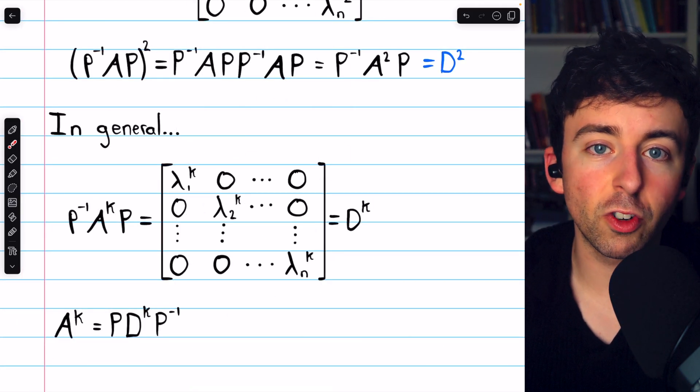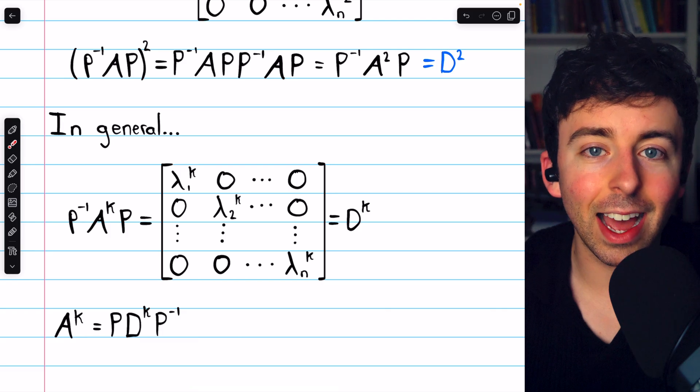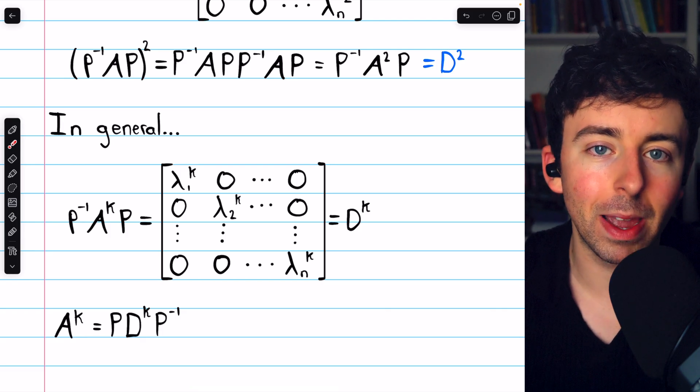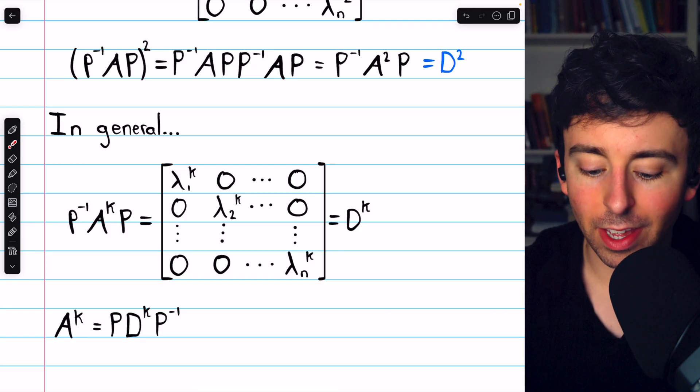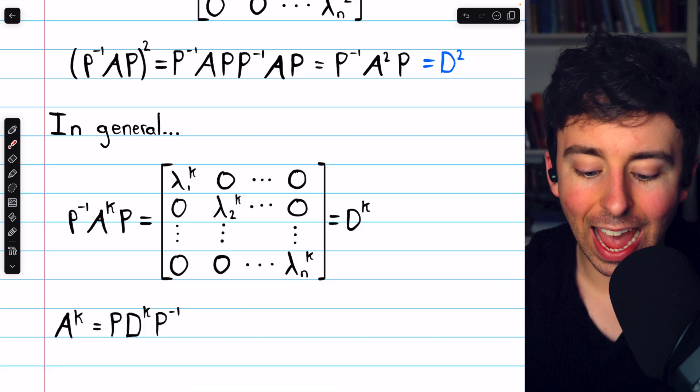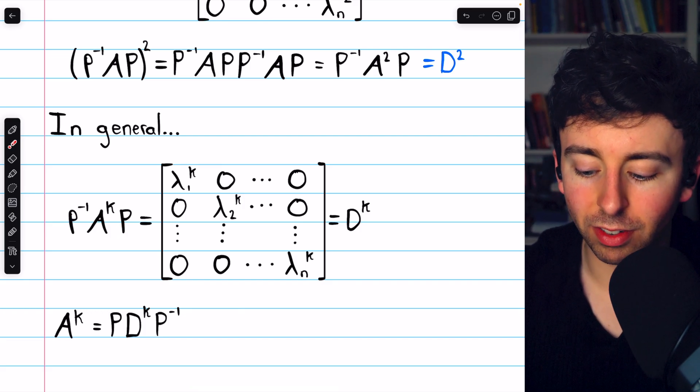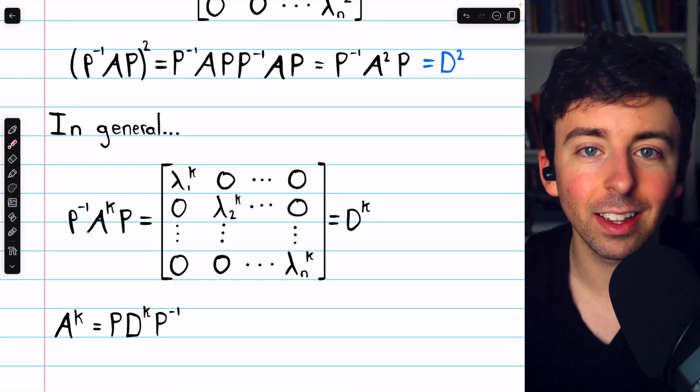And this argument holds in general. If A is a diagonalizable matrix and the diagonalizing matrix is P, then P inverse A to the K times P is just equal to D to the power of K.